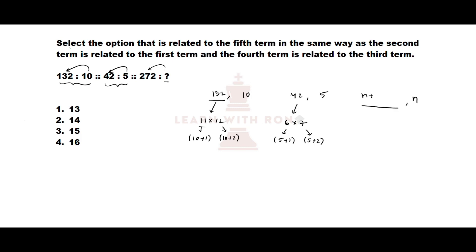The pattern is the product of the next two successive numbers after n. Now we need to find n such that (n+1)(n+2) = 272. We can verify using the options.